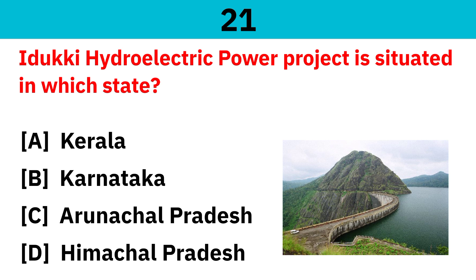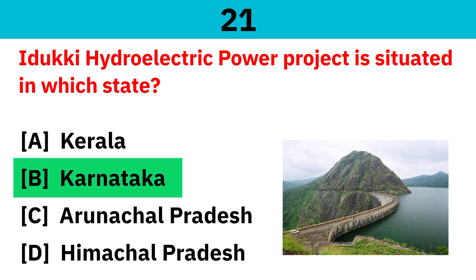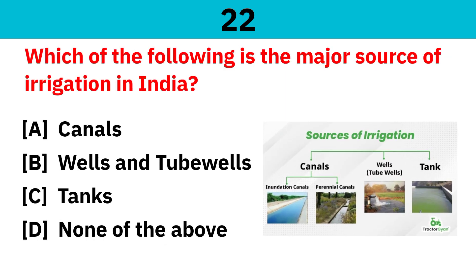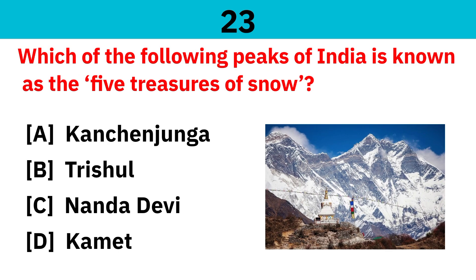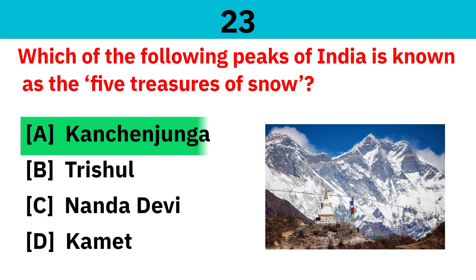Dukki Hydroelectric Power Project is situated in which state? Correct answer is Karnataka. Which of the following is the major source of irrigation in India? Correct answer is Wells and Tube Wells. Which of the following peaks of India is known as the Five Treasures of Snow? Correct answer is Kanchenjunga.